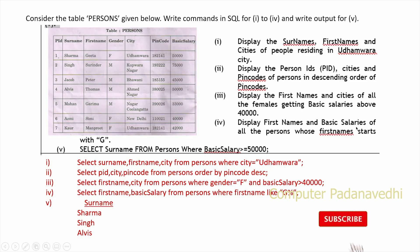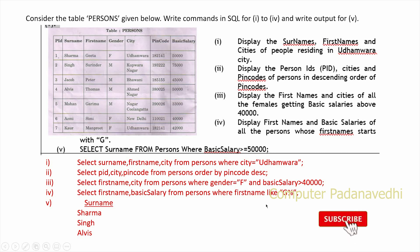Display first name and base salary of all persons whose first name starts with G: SELECT first_name, base_salary FROM persons WHERE first_name LIKE 'G%'.